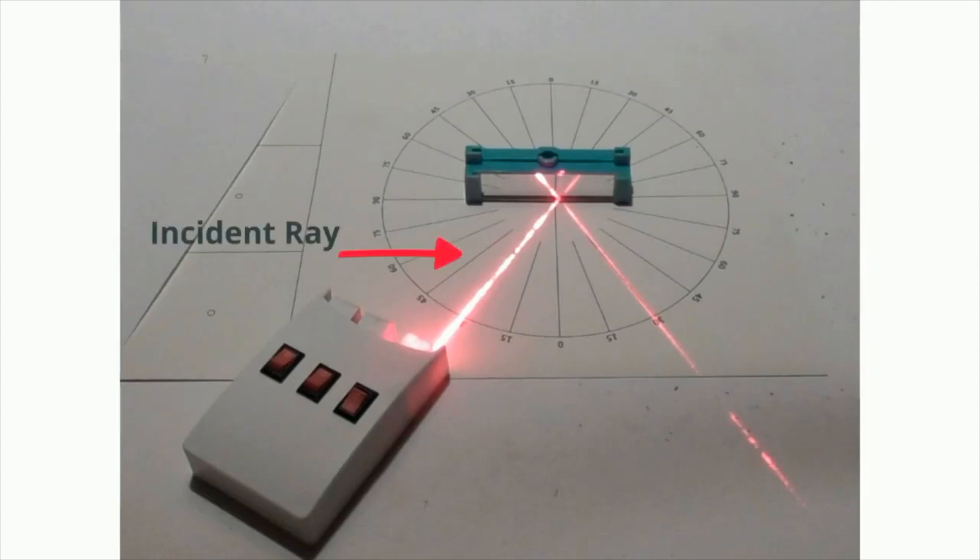Here's the ray of incidence. Here's the ray of reflection. And a line perpendicular to the surface is called the normal line. And again, it's perpendicular to the point where the light rays strike the surface.